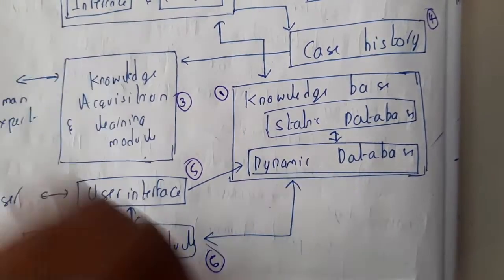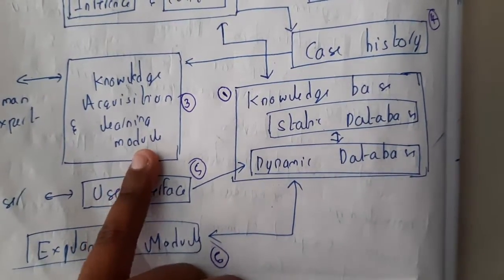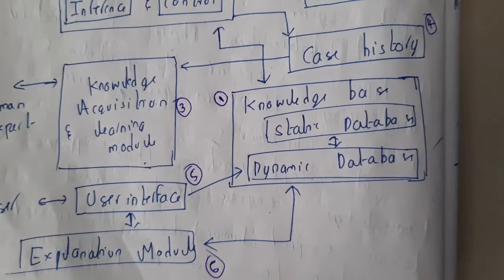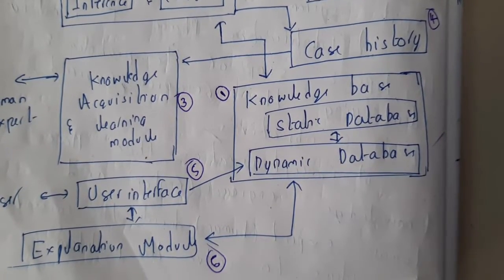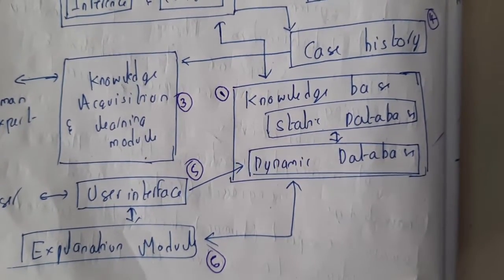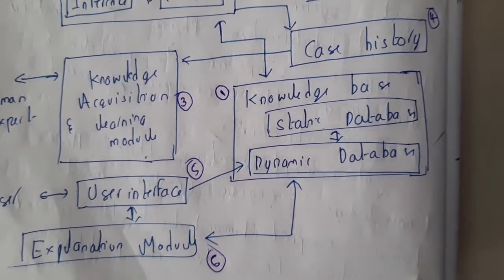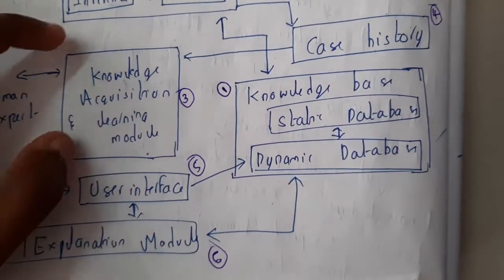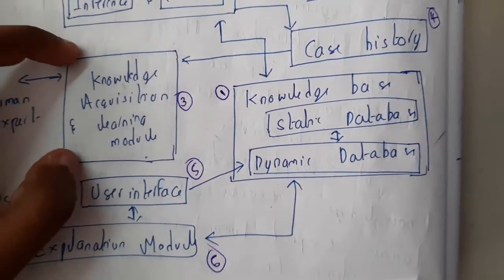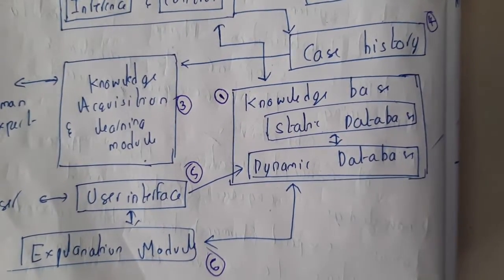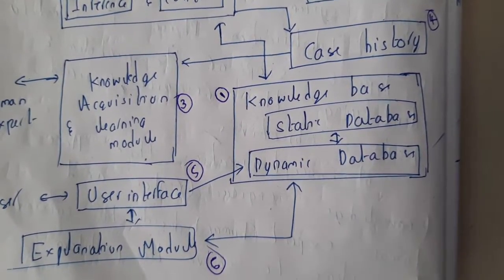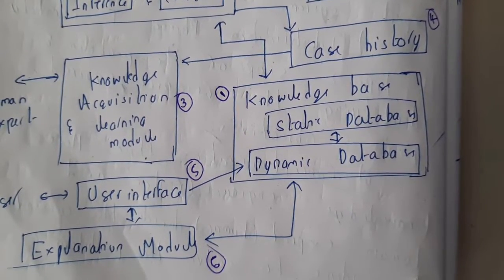The third component is knowledge acquisition — the knowledge acquisition and learning module. Whenever you want to inculcate or include new thinking skills or any new things into the expert system, you do it with the help of this knowledge acquisition module. It learns new things according to requirements.